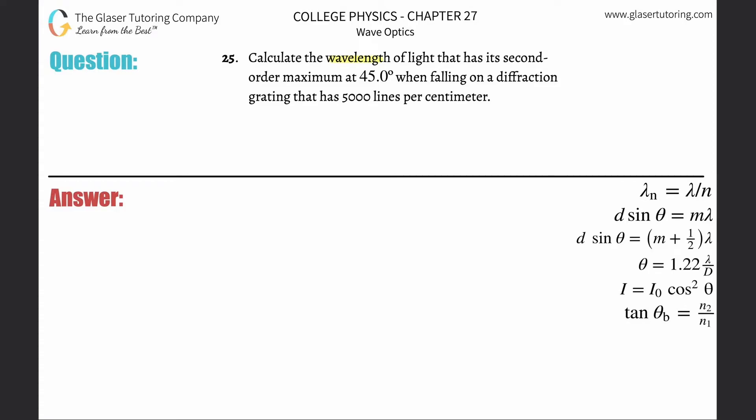Number 25. Calculate the wavelength of light that has its second order maximum at 45 degrees when falling on a diffraction grating that has 5,000 lines per centimeter.